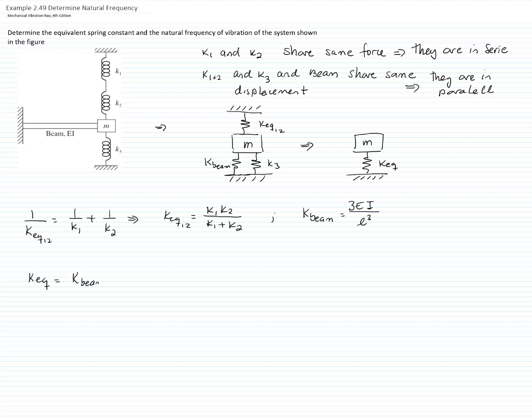Now, if we add those three constants together, because as we say they share the same displacements and therefore they are in parallel, we can write that the equivalent constant of the spring of the total system will be equal to